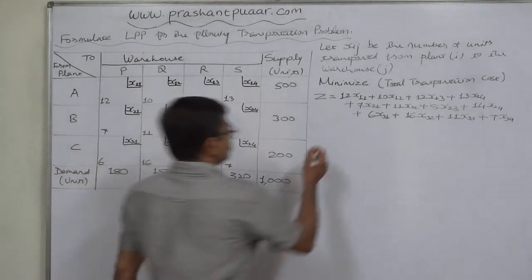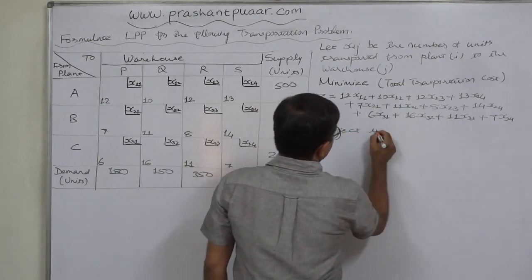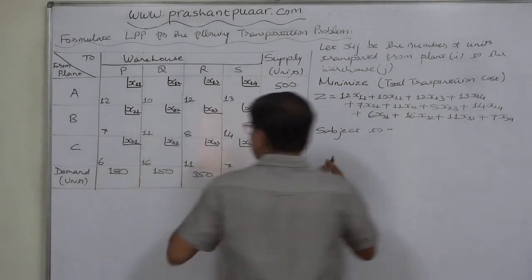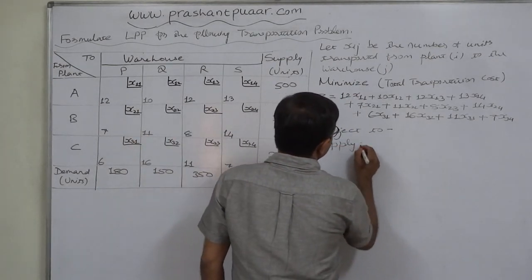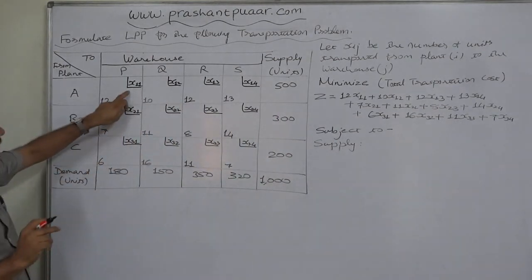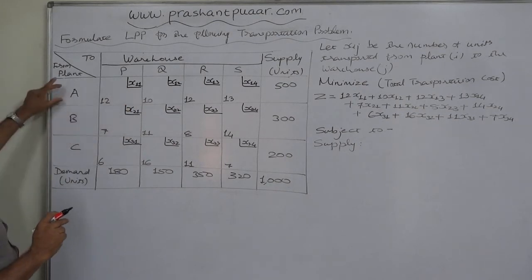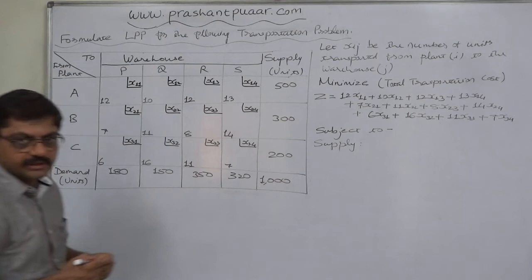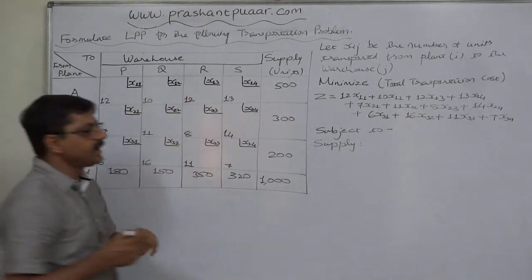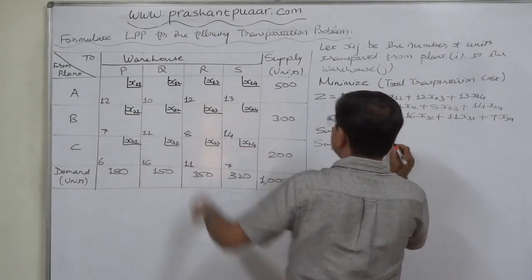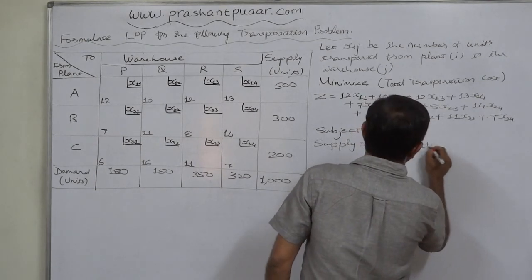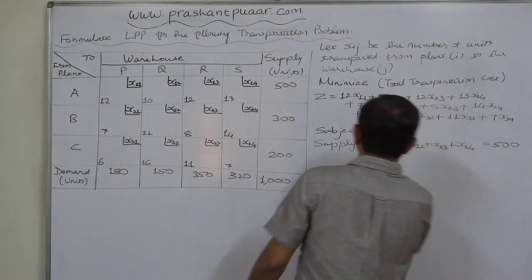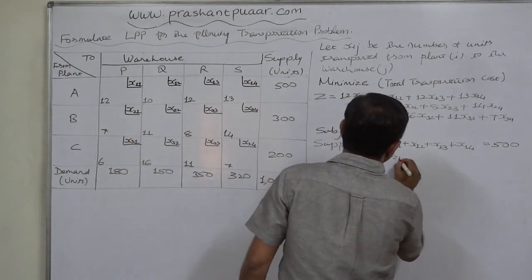This is subject to constraints of two types: supply-related constraints and demand-related constraints. We have three supply points, so there will be three supply constraints. The quantities transported from plant A are x11, x12, x13, and x14, and the total supply available from plant A is 500 units. So the constraint for plant A is: x11 + x12 + x13 + x14 = 500. For plant B: x21 + x22 + x23 + x24 = 300.